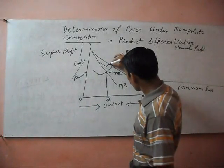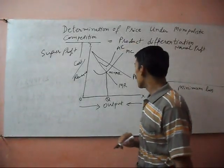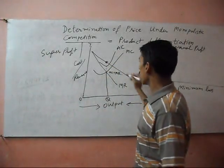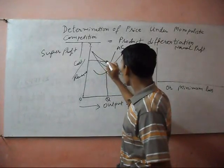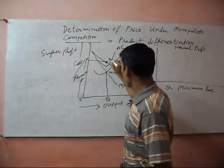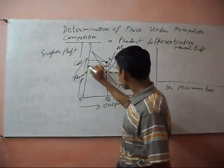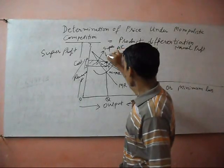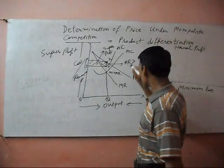This is the curve, average revenue. Now price is fixed at average revenue. Average revenue and price are the same thing. This area represents super profit because at this point the average revenue is more than average cost.